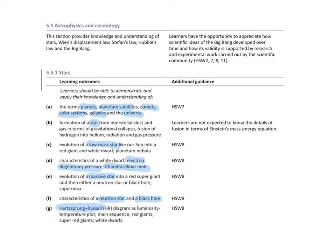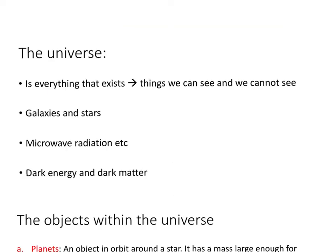We will begin first with the key terms. The universe is everything that exists — everything that we can see and everything that we cannot see as well. For example, galaxies and stars we can see, but we can't see radiation like microwave or infrared radiation. We can't see dark energy and dark matter either, but we know they exist because they contribute to factors we will explore in chapter 20, cosmology.